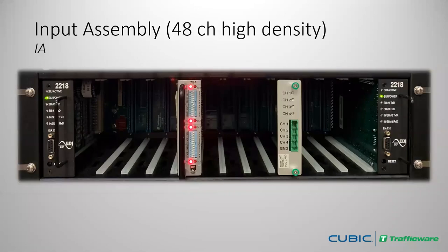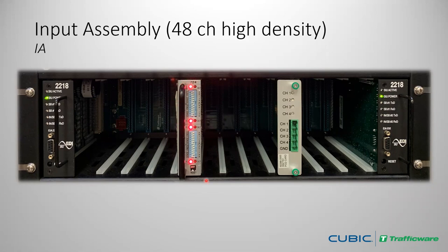There's also a high density 48-channel input assembly — double the density in the same size. To achieve this, it uses two SIUs (losing the four freeform switches) and takes four-channel single-width high-density cards, where the face plate is the standard width rather than the double-wide typical of four-channel cards in legacy cabinets.